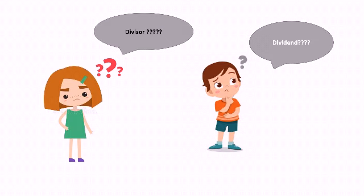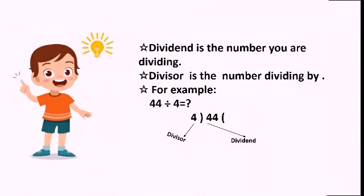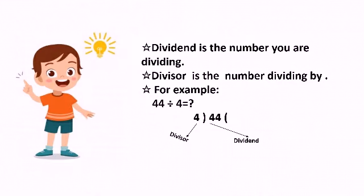The dividend is like the patient — it is the number being operated on. So the dividend is the number you are dividing, and the divisor is the number you are dividing by.